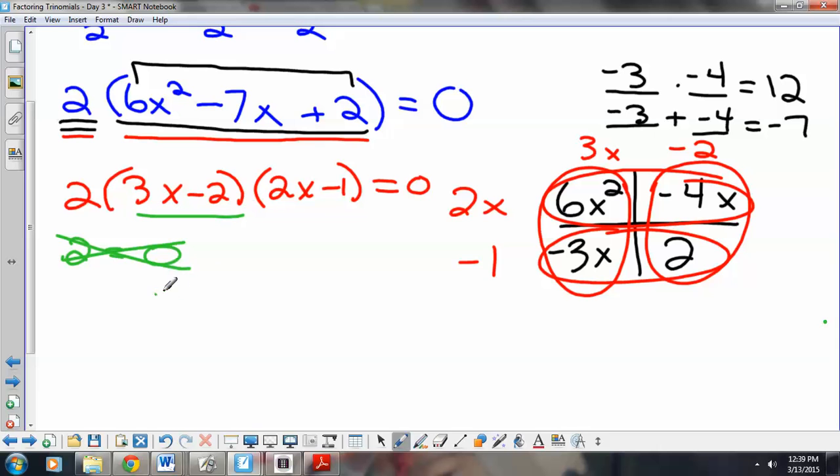So, we'll do the second factor. 3x minus 2 equals 0. So, we can add 2. 3x equals 2. Divide by 3. x equals 2 thirds. So, 2 thirds is one of my answers.